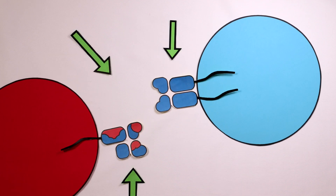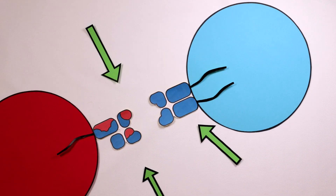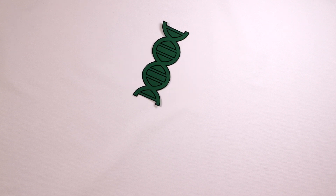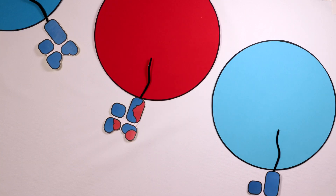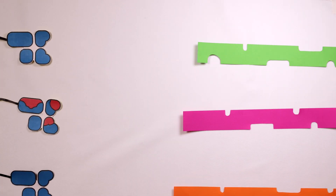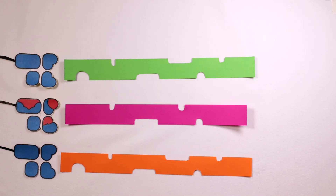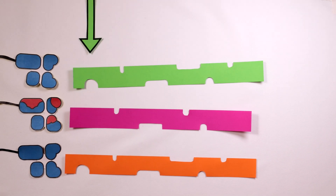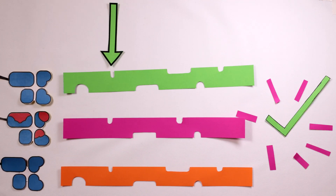Immune responses are regulated by human leukocyte antigens, a number of cell surface proteins that are encoded by the HLA genes. In order to avoid the immune system recognizing donor cells as foreign, a common strategy is to compare the HLA genes of patients and donors and ideally search for pairs where these proteins are identical.